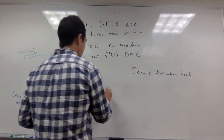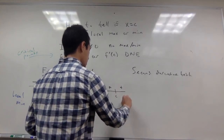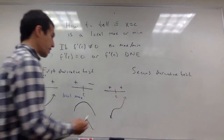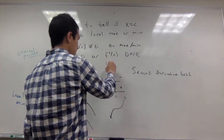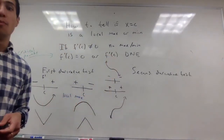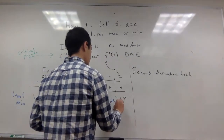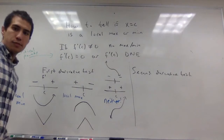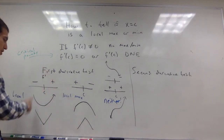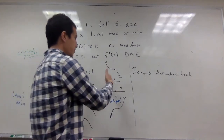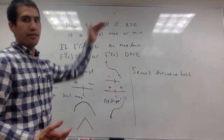What else could happen? The function could go from increasing to increasing, or from decreasing to decreasing. In these cases it's going to be neither a max nor a min. So the first derivative test: if the sign goes from negative to positive, it's a minimum; from positive to negative, it's a maximum; and if the derivative does not change sign — positive to positive or negative to negative — then it's neither, because the function is either strictly increasing or strictly decreasing.